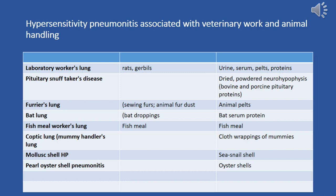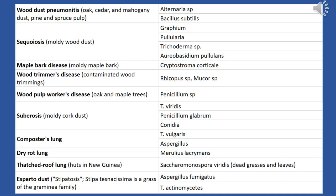Hypersensitivity pneumonitis associated with wood and construction includes conditions such as wood dust pneumonitis, sequiosis, maple bark disease, wood trimmer's disease, wood pulp worker's disease, suberosis, composite worker's lung, dry rot lung, thatched roof lung, and esparto dust pneumonitis.